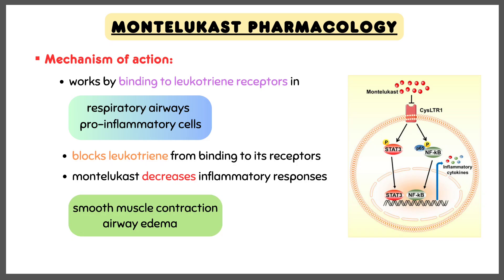Talking about the mechanism of action: Montelukast works by binding to leukotriene receptors in respiratory airways and pro-inflammatory cells, which blocks leukotriene from binding to its receptors. This decreases inflammatory responses, such as smooth muscle contraction and airway edema.